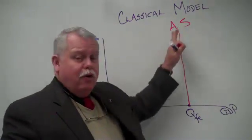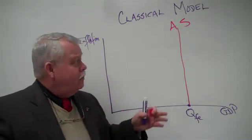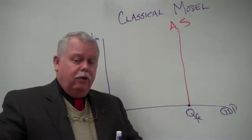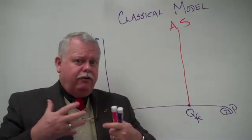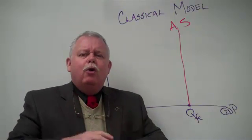And when you see that vertical aggregate supply curve on any sort of graph, the first thing you ought to be thinking is, hmm, it looks like a classical model. It looks like a model that assumes markets are really powerful, really smooth and efficient, work quickly, et cetera.